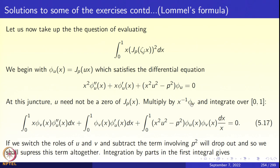Multiply the differential equation by x⁻¹ φ_v and integrate over the interval [0, 1]. We get x φ_v φ_u'' + φ_v φ_u' + (x u² − p²/x) φ_u φ_v equal to 0. I assume p ≠ 0, so this is integrable; when p = 0, it gets better because that term disappears. We are ultimately going to switch the roles of u and v and subtract, so the term −p² φ_u φ_v / x will cancel out.